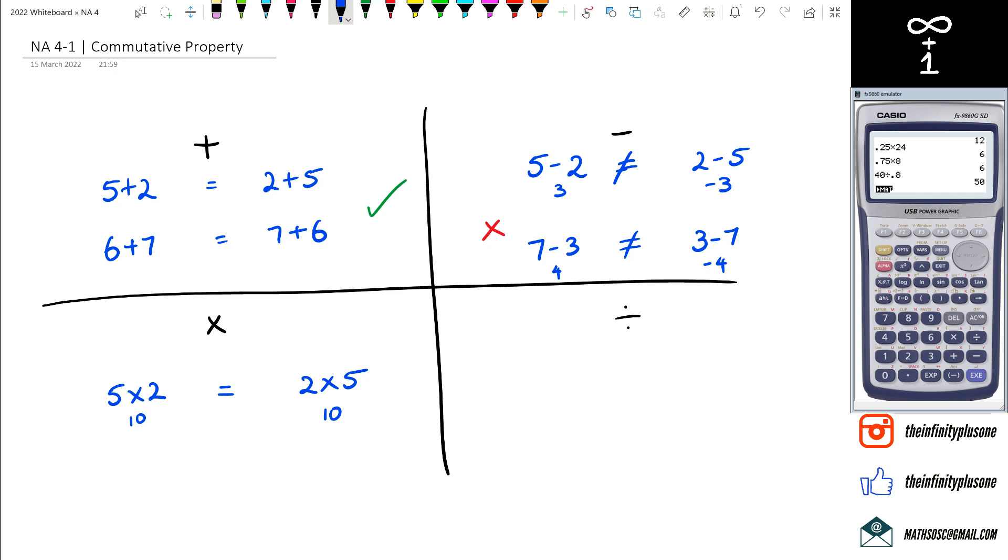One more multiplication example: let's do 4×3. So 4×3 is 12, and we can say that 3×4 is also equal to 12. This is the commutative property of multiplication. Long story short, the order doesn't matter for addition and multiplication. Let's have a look at division then.